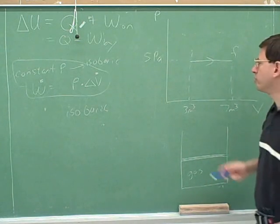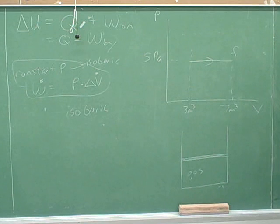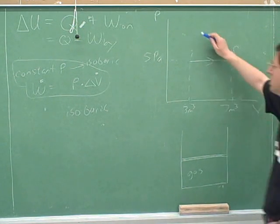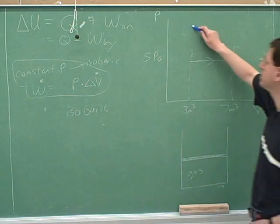So just to review that, what would be the magnitude of the work here? What's the magnitude of the work in this case? Say again? What's 7 minus 3? That's right. Okay, take your time. Okay, 20 joules.